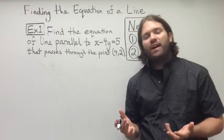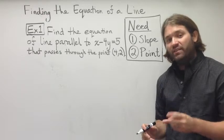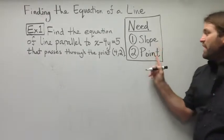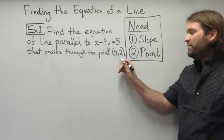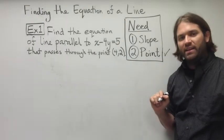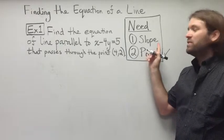In order to find the equation of the line, you always need two things. You need the slope and you need a point. Now, in this case, we're given the point, so we have this piece of information that we need, but we don't know the slope.